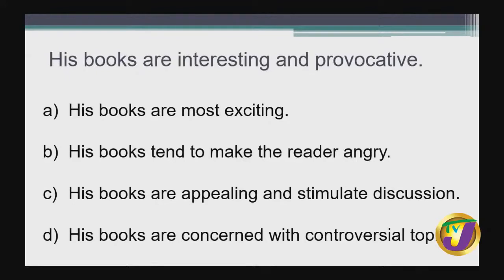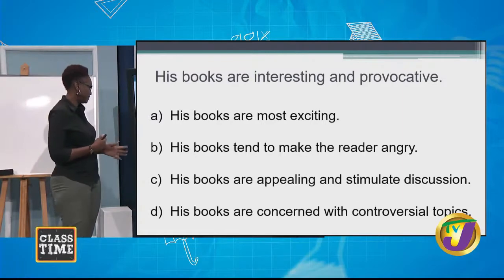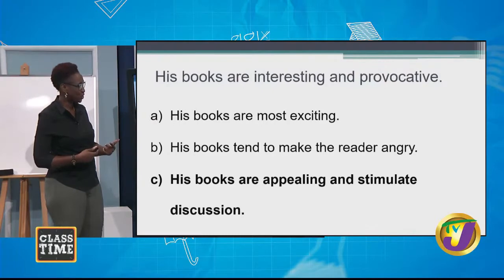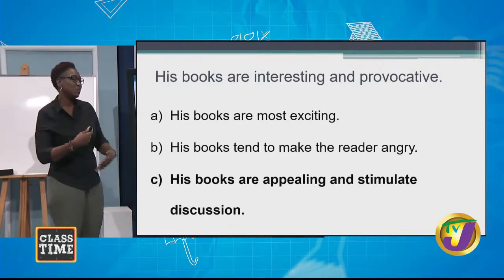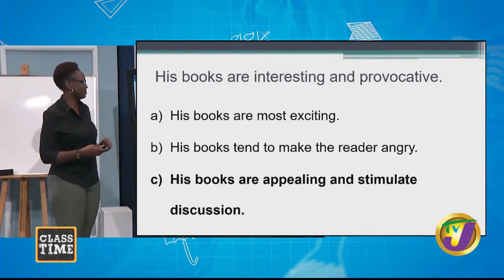Next sentence: 'His books are interesting and provocative.' Shorter doesn't necessarily mean easier. Options: A — 'His books are most exciting.' B — 'His books tend to make the reader angry.' C — 'His books are appealing and stimulate discussion.' D — 'His books are concerned with controversial topics.' The answer is C — 'interesting' maps to 'appealing' and 'provocative' maps to 'stimulate discussion,' so the same idea is conveyed.